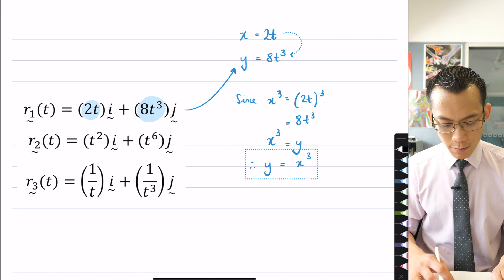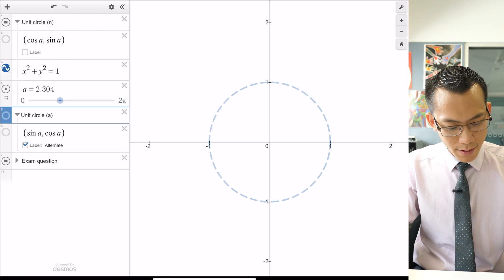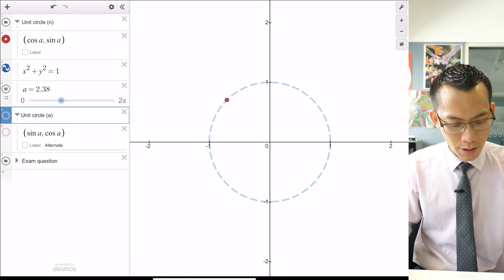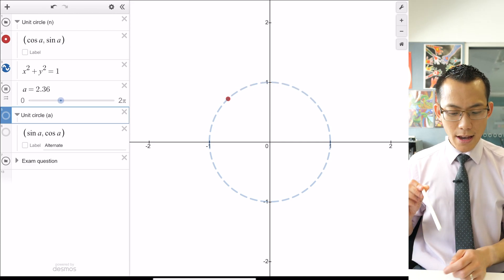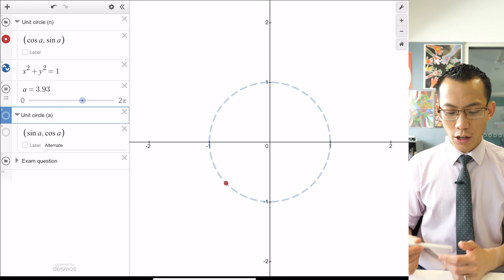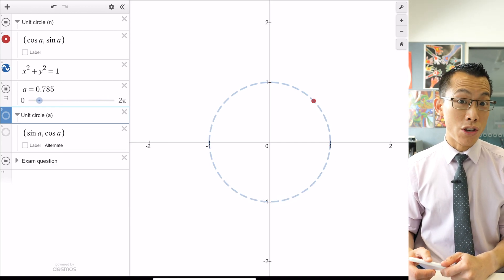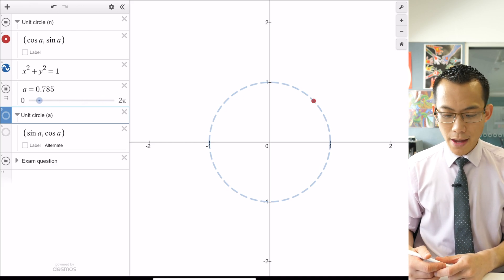When you throw in values of t, what happens to the values of x and y that you get? Well, if you just go back to Desmos over here, when we had a look at the regular unit circle, I'm just going to put the regular old corner there and press play. There we go.